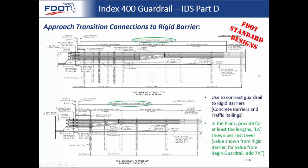Moving along to IDS part D: approach transition connections to rigid barrier. We covered these well in the index modules. In your plans, you want to provide for at least the length LA, measured from the face of the rigid barrier. That LA segment has to fall outside of other segments like the approach terminal LE, and you need to make sure you have enough space accounted for in your final design.